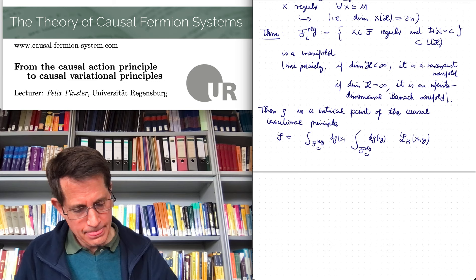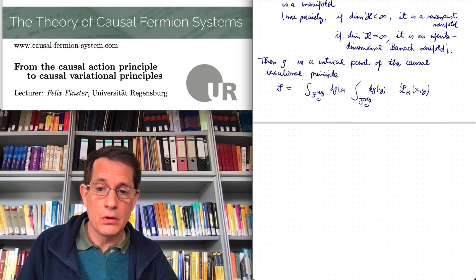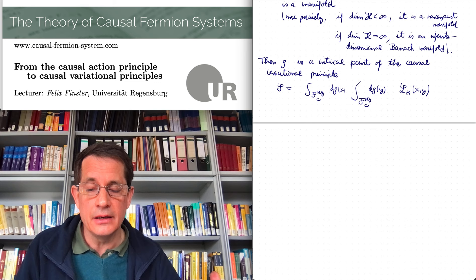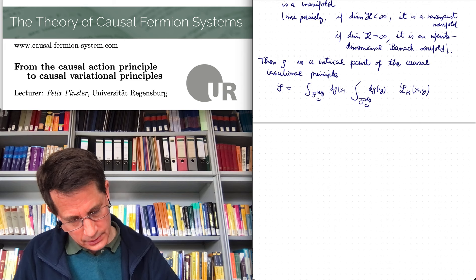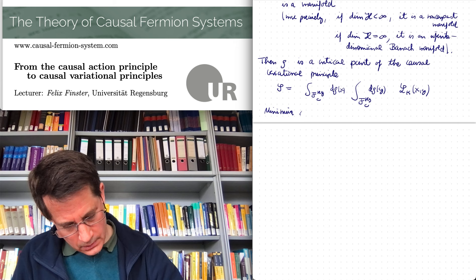Where we minimize now over all Borel measures on F_reg_c. And the only constraint is that the volume constraint must hold. So this means minimize over